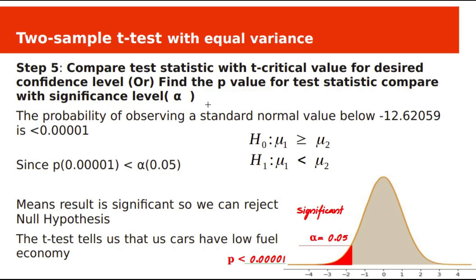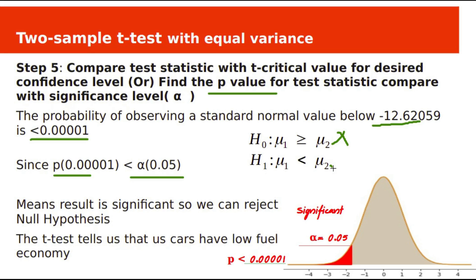We can also check using p-values. The p-value for minus 12.62059 is less than 0.00001. Since p-value is less than alpha 0.05, the result is statistically significant and we reject the null hypothesis. The alternate hypothesis is true — US cars have lower fuel economy than Japan cars.